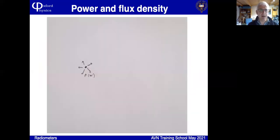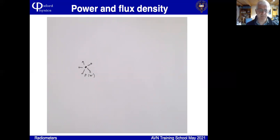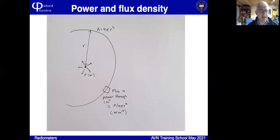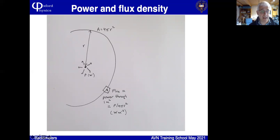Now let's talk about what we're actually measuring with the radio telescope and how we describe the signals. Imagine a source of radiation floating in space producing radiation with a total power of P watts. Drawing a sphere around that point, the total power is spread over an area of 4πr². The amount passing through each square meter near us is P over 4πr². This has units of watts per square meter and we call that flux — power per unit area.